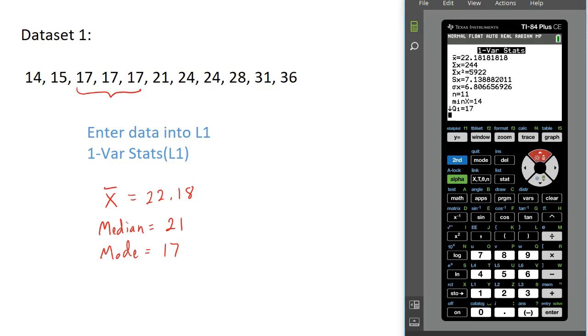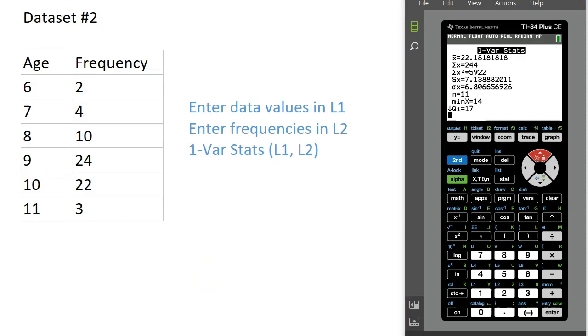Here's our second dataset. Notice it's a little bit different. Our dataset is given to us not as a list, but in a frequency table. What we have here are the age of some kids that went to a summer camp and the frequencies, the number of children of each age.